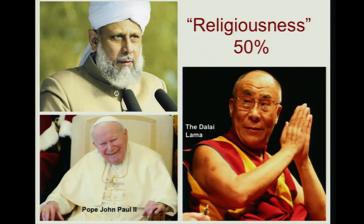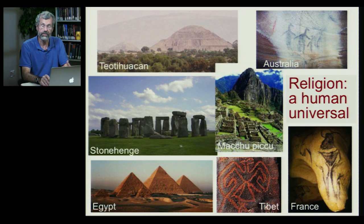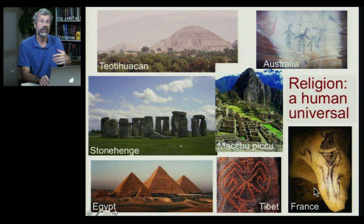Religiosity is another trait that is a human universal. We see it in all different societies — Muslim, Christian, and Buddhist. We see a high heritability between parents and offspring: parents who have a high degree of religiosity tend to have offspring who are also highly religious. This seems to be universal throughout our history, seen in ancient cultures of the Aztecs, the aborigines of Australia, the Druids of Stonehenge, the Incas, the ancient Egyptians, and Tibet. Even back in the earliest art forms in the caves of France, early humans from 35,000 years ago created imagery suggesting they had a symbolic form of looking at spirits and experiences outside normal perception. Religion does seem to be a very deep human universal.